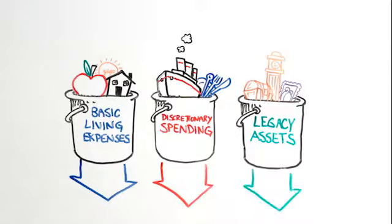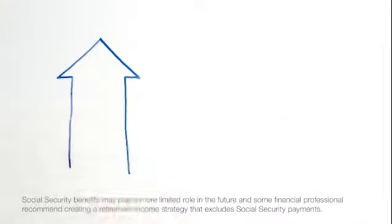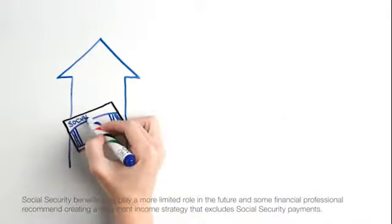Next, pair appropriate investments to each bucket. For instance, Social Security might be assigned to the basic living expenses bucket.